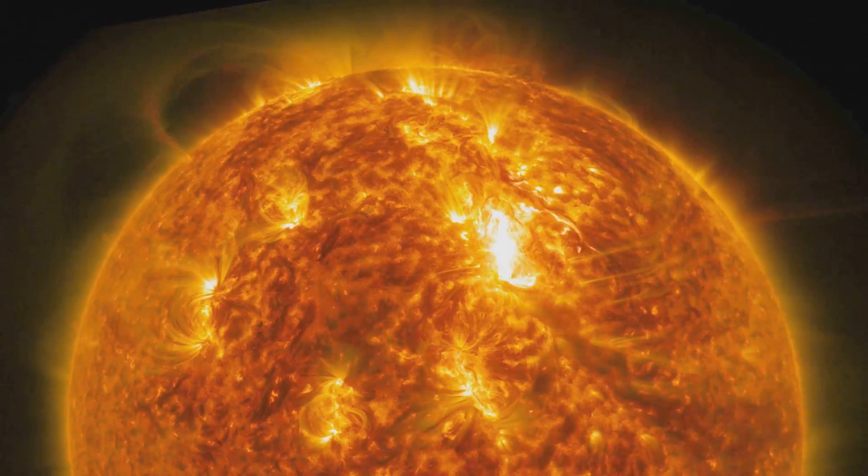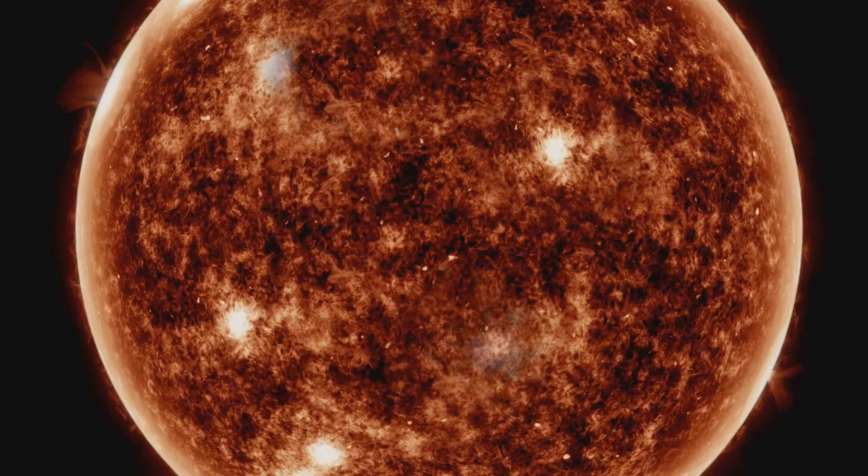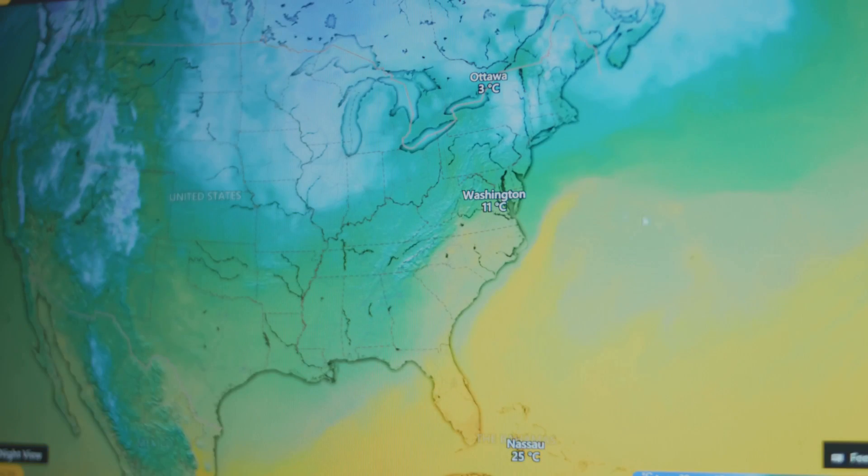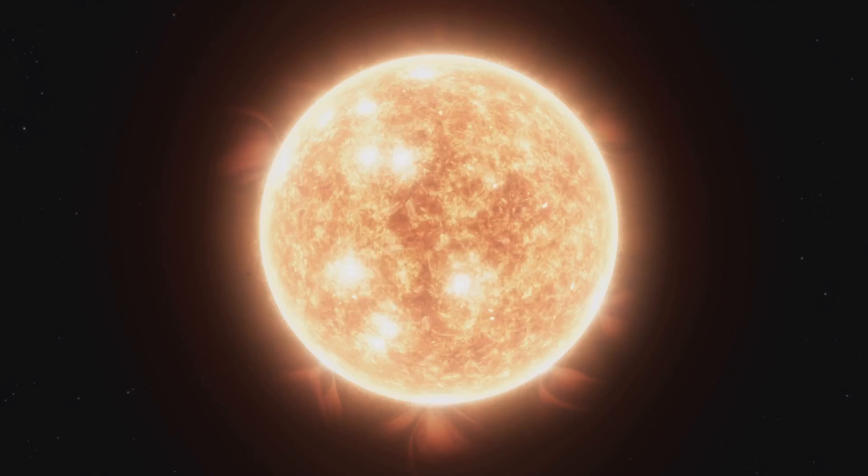The sun's magnetic fields twist and tangle, sometimes snapping and releasing bursts of energy. Occasionally, the solar cycle nearly shuts down, as during the Maunder minimum, which coincided with the Little Ice Age. The sun can surprise us.